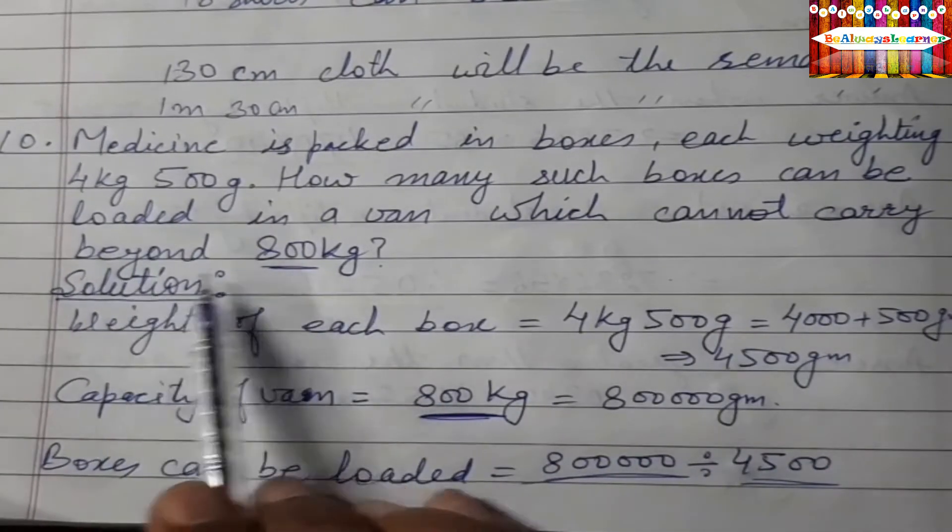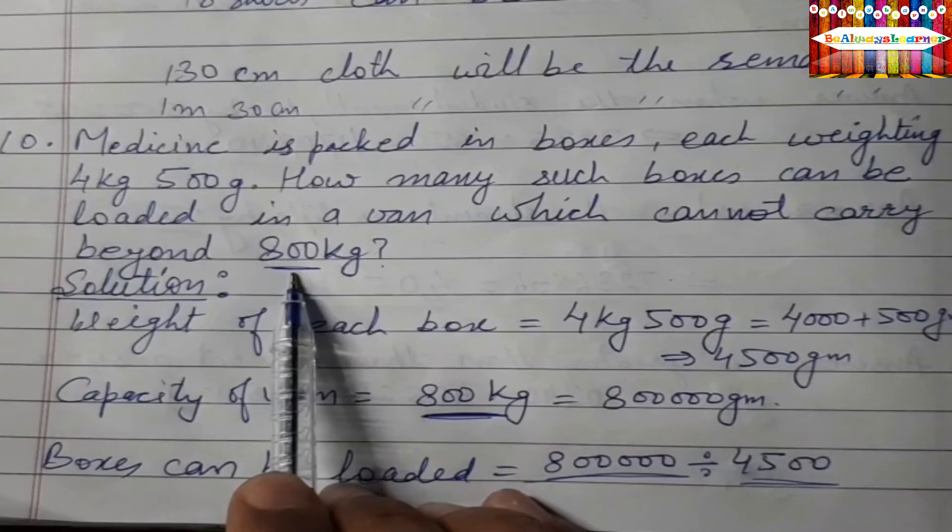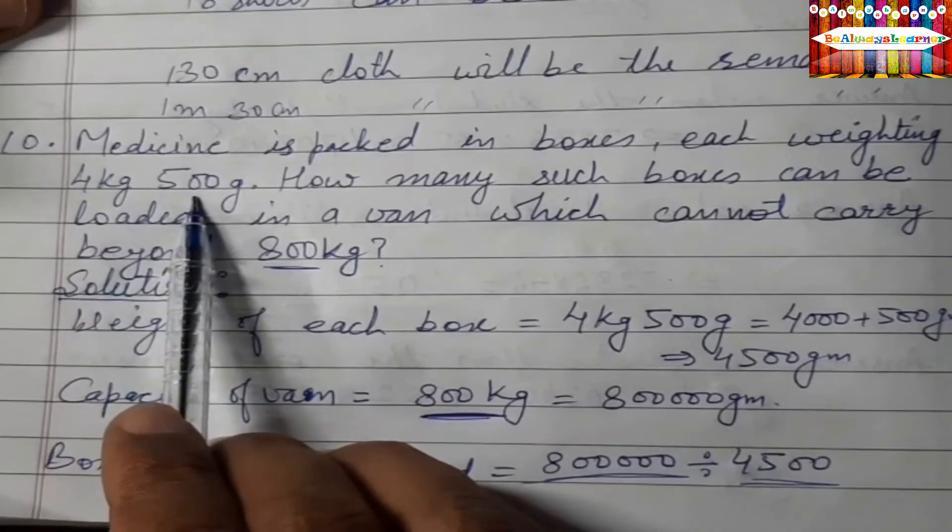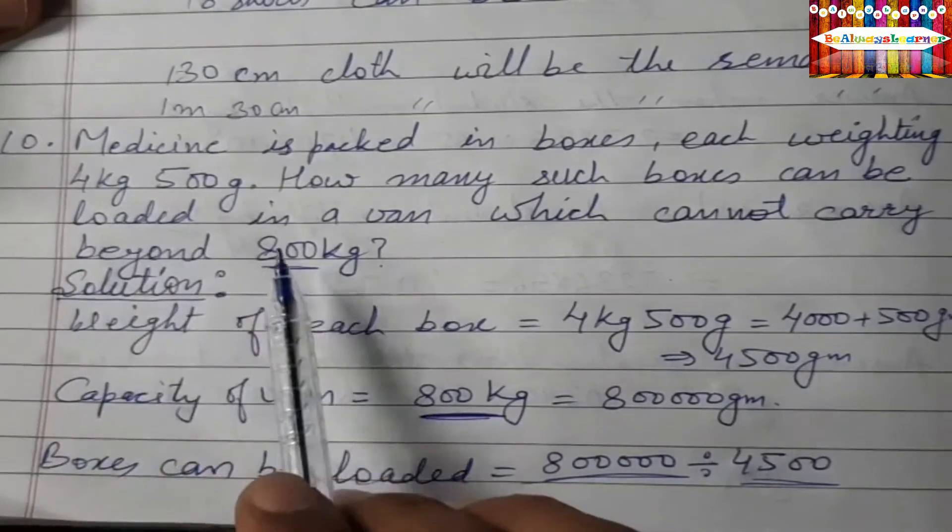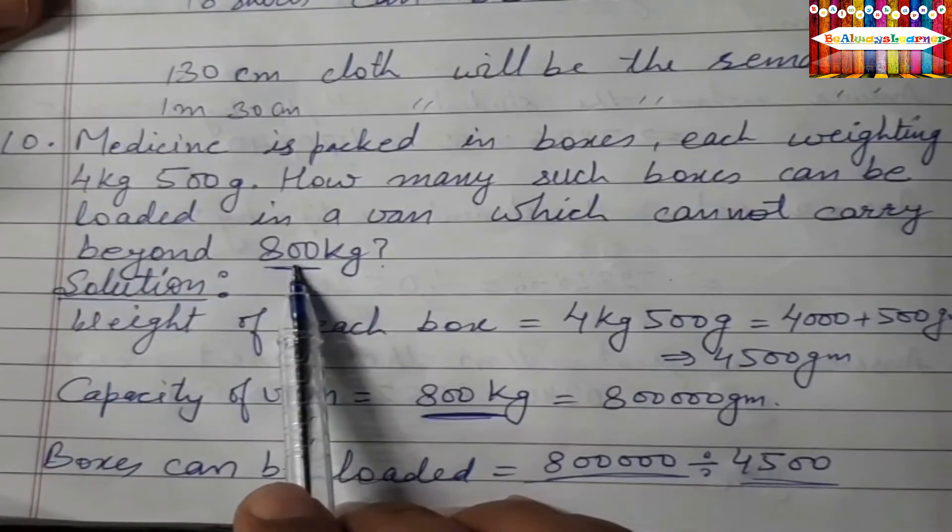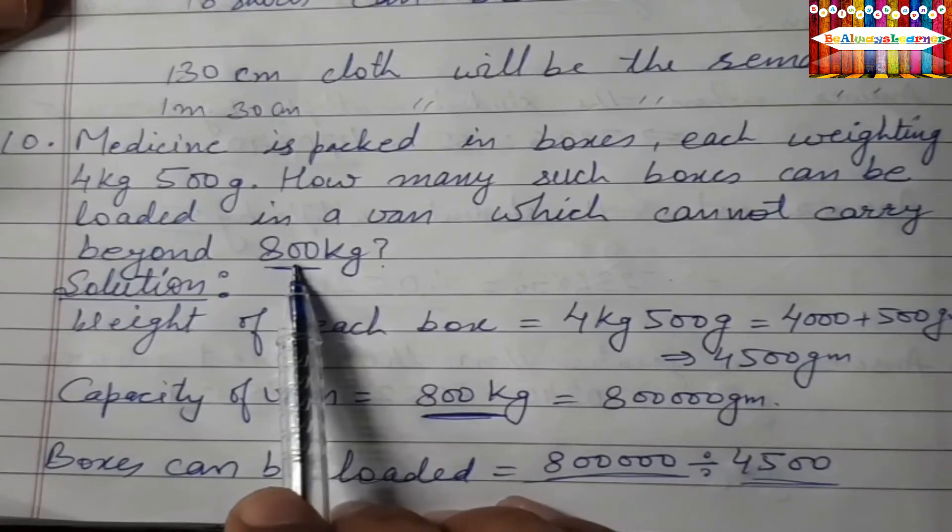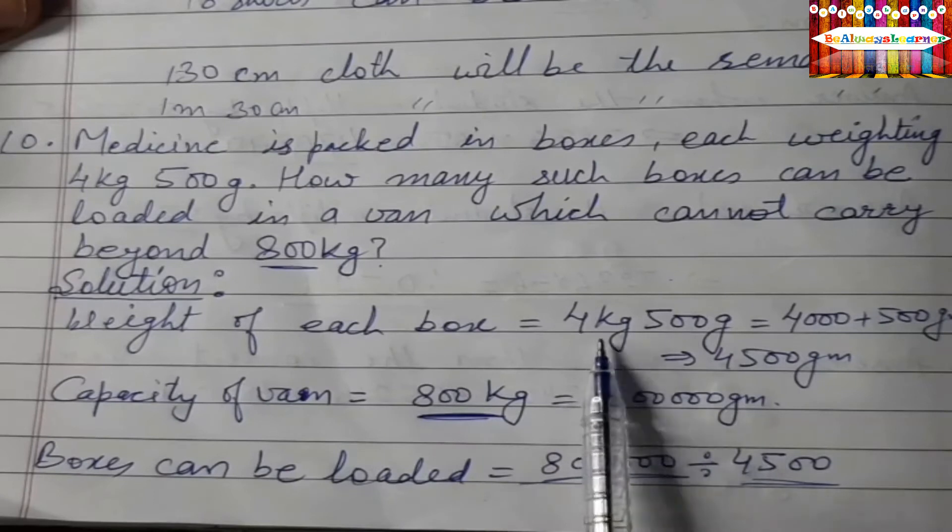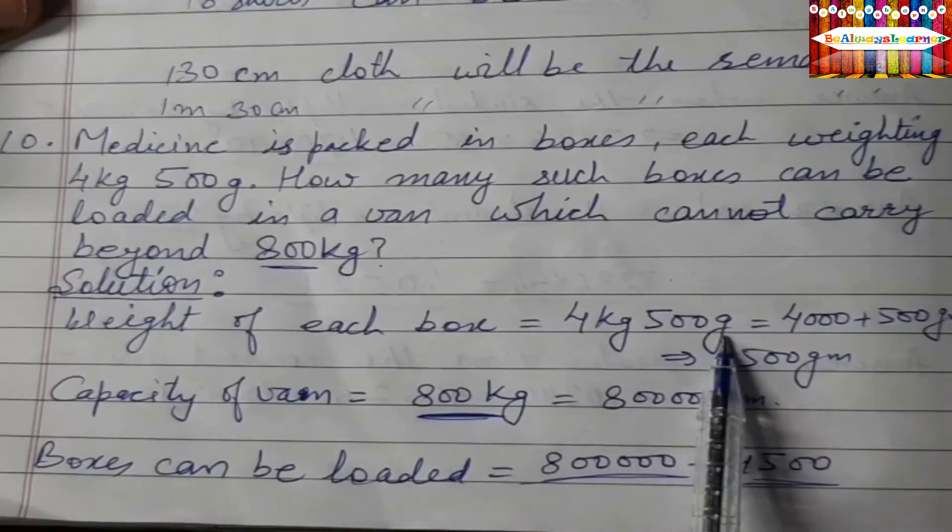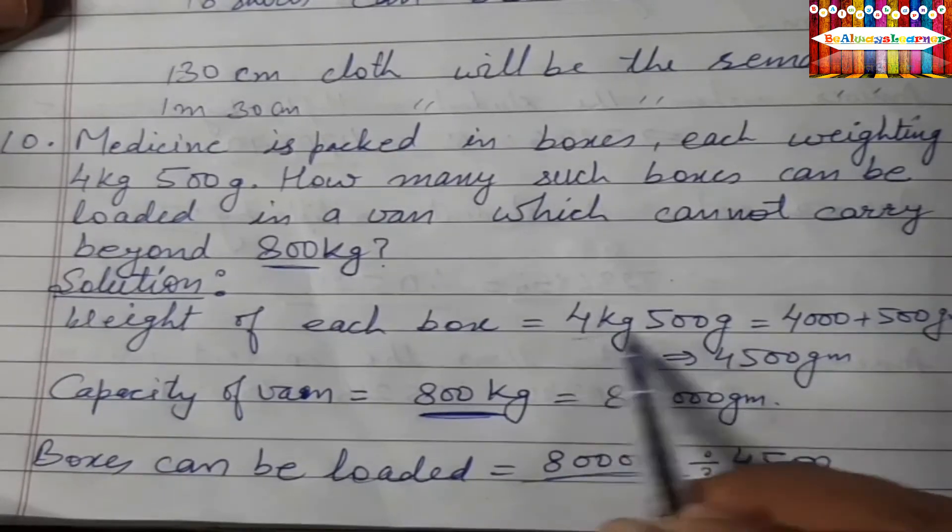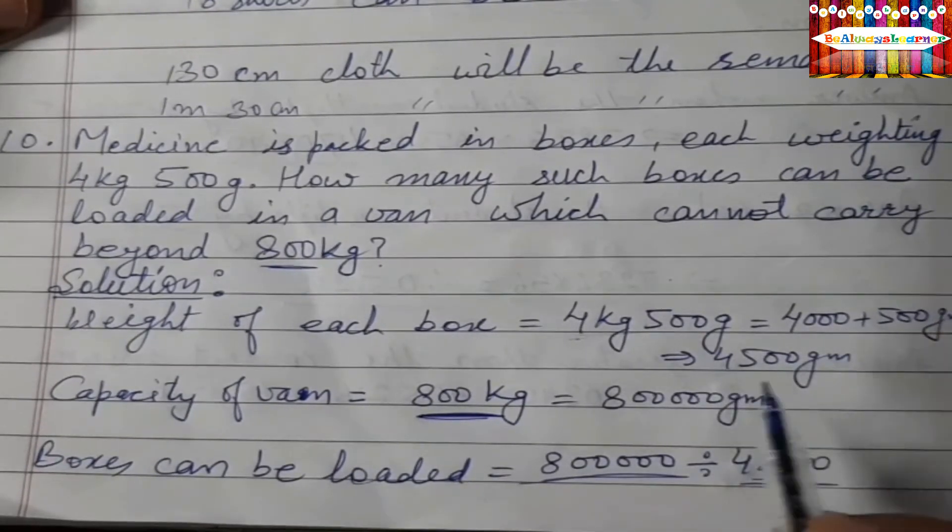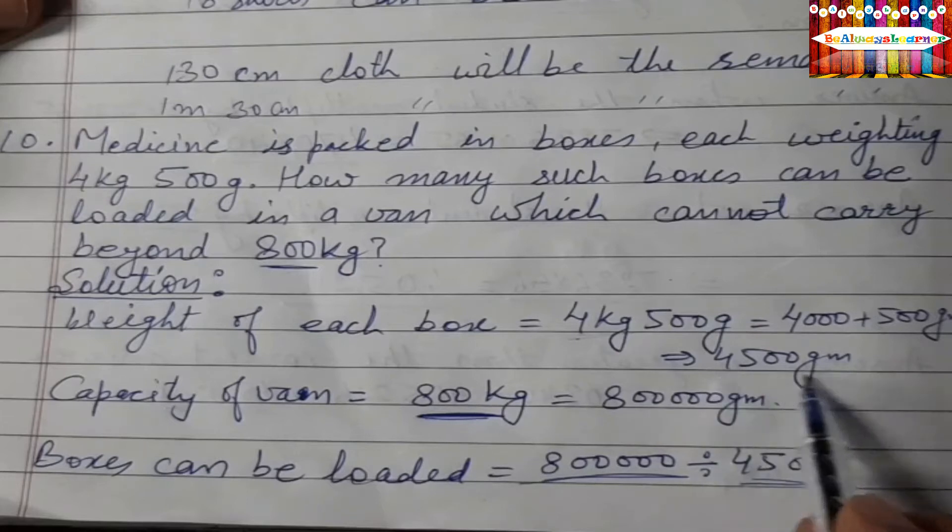How many such boxes can be loaded in a van which cannot carry beyond 800 kg? So we have 4 kg and 500g, we need to convert this because we prefer small units to solve. Weight of each box is 4 kg and 500 g, so we have 4 kg is equal to 4000g plus 500g and we have 4500g.